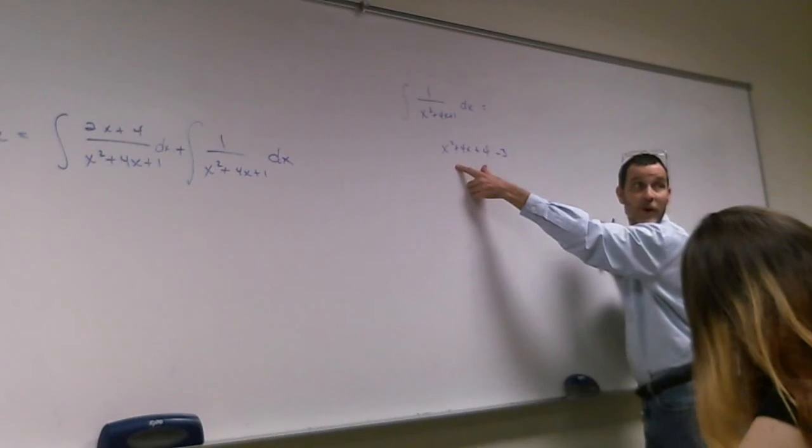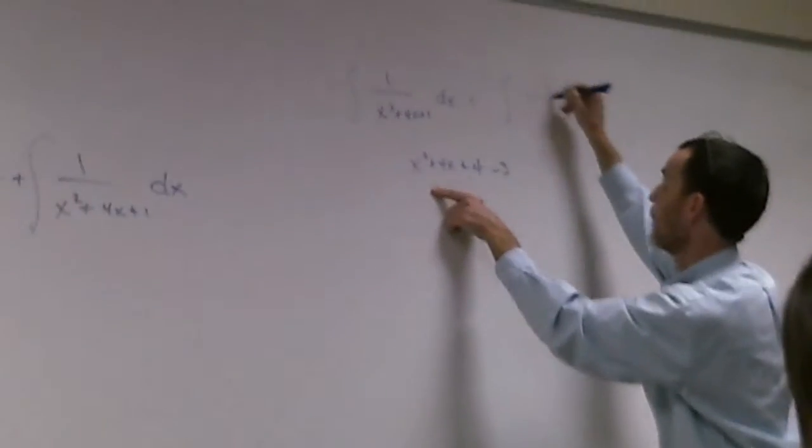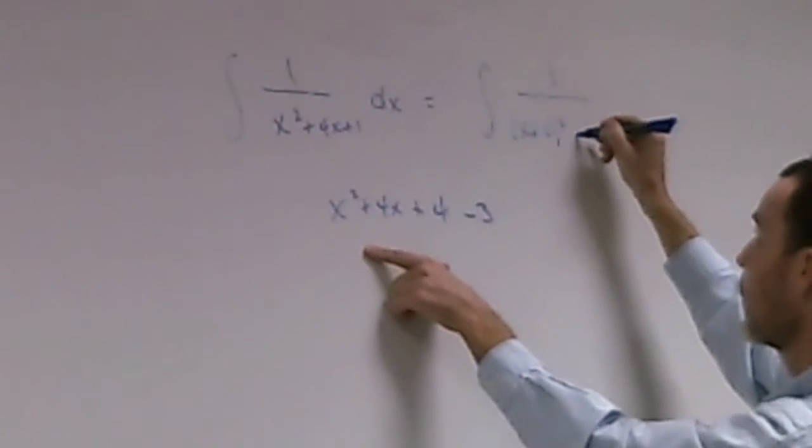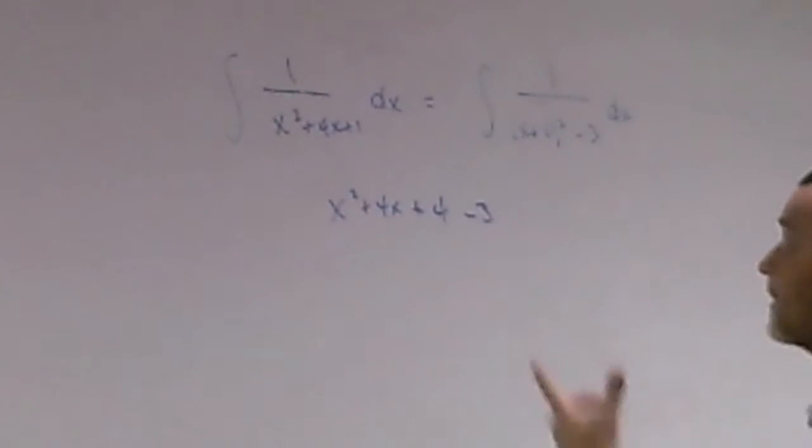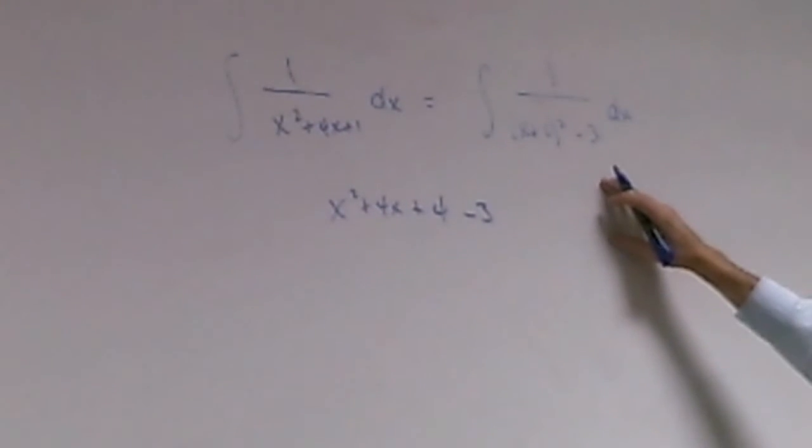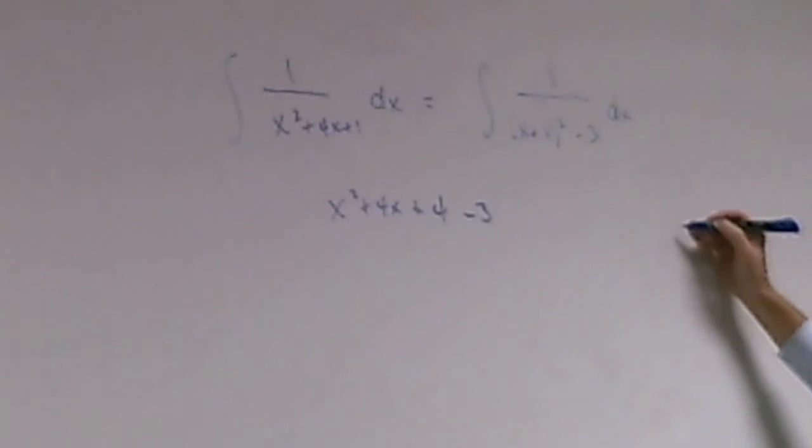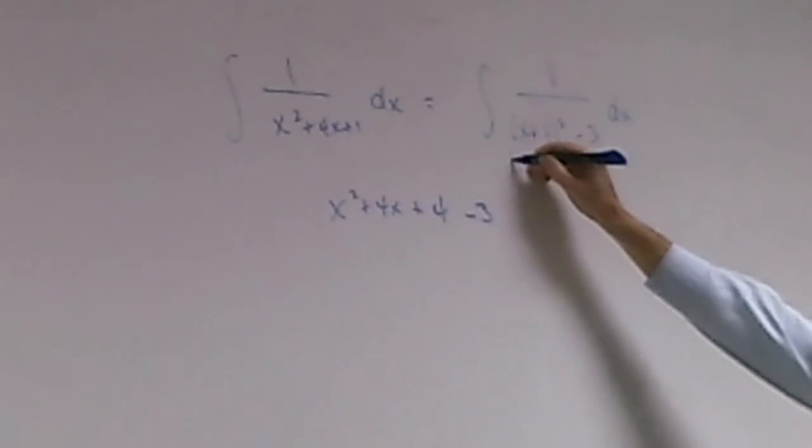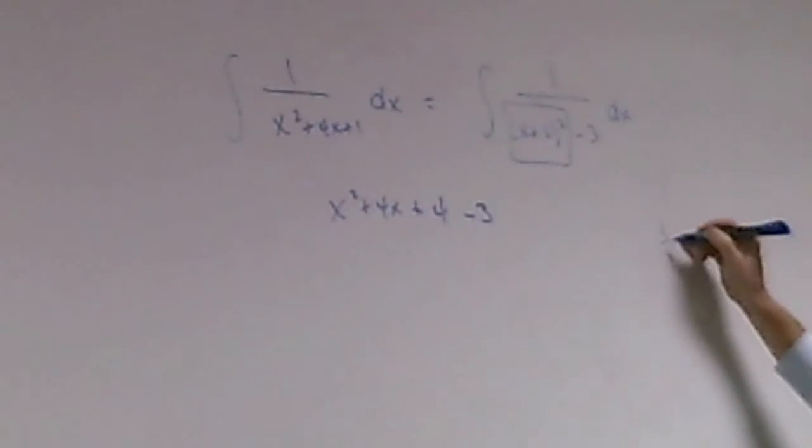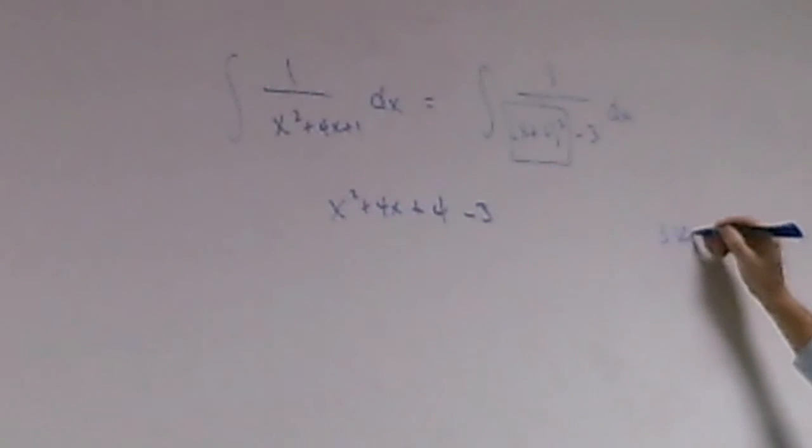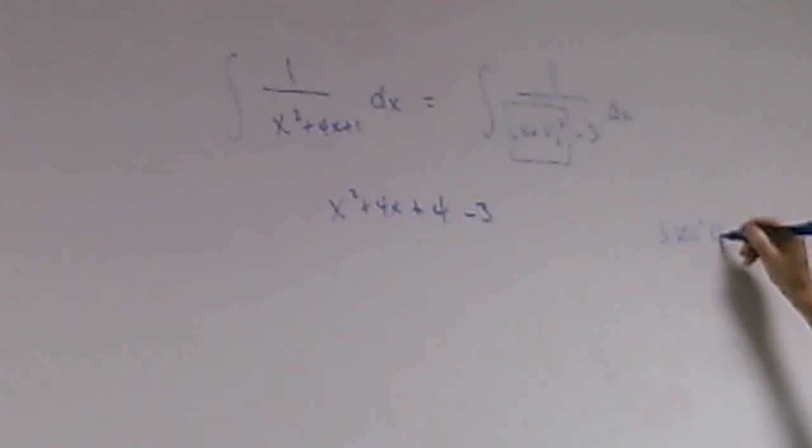And this is a perfect square. So now that's equal to 1 over x plus 2 squared minus 3, which is a trig sub. So now I recognize this is a trig sub. And I want to let, what I need is this whole thing to be 3 secant squared.